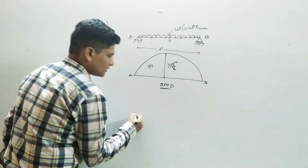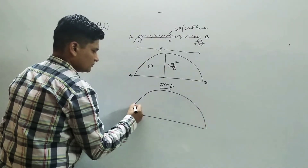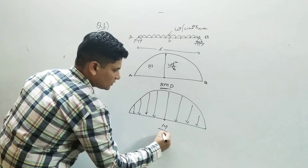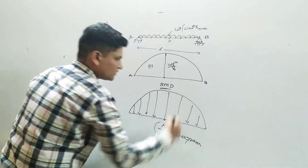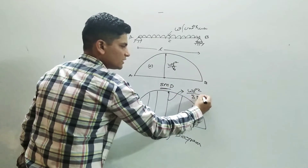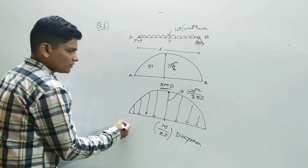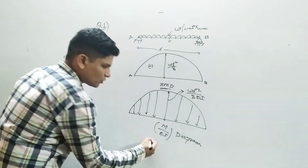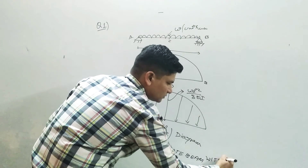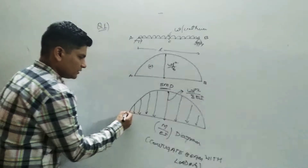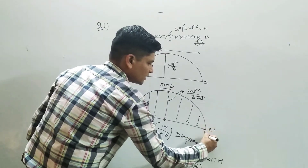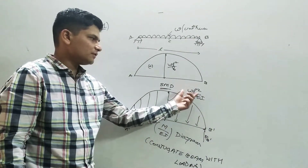Based on the BMD, we draw the M/EI diagram by dividing the entire diagram by EI. The M/EI diagram is also parabolic, with magnitude WL²/(8EI) at the center. This M/EI diagram applied as loading gives us our conjugate beam. Points A and B in the real beam become A' and B' in the conjugate beam, with reactions RA' and RB'.